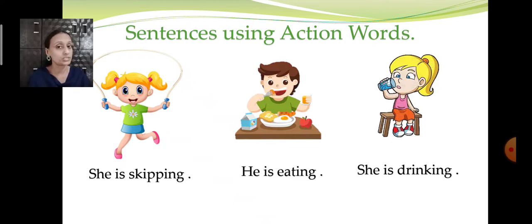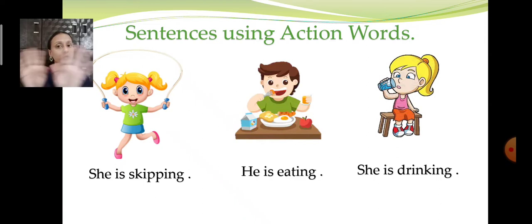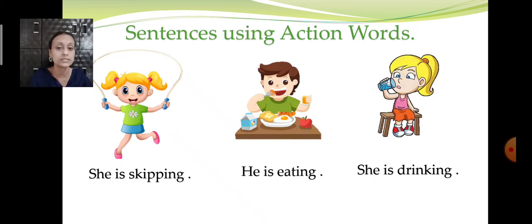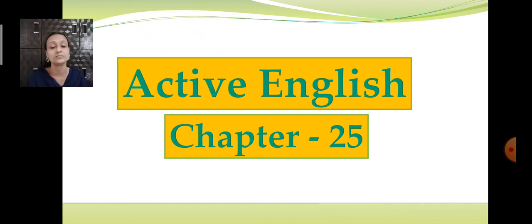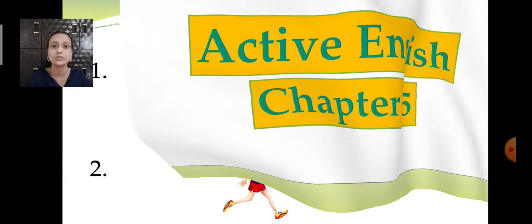Today we are going to use these action words in sentences. She is skipping. He is eating. She is drinking. The first boy was jumping, the other boy was singing and dancing, then eating, writing. Can you give me a few action words? If you wave your hand, this is also an action. Look up, look down, pat yourself. Today in your active English, chapter number 25, we are going to write sentences using action words.